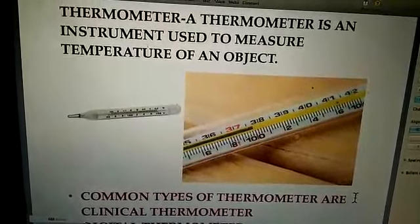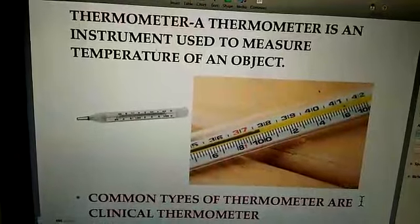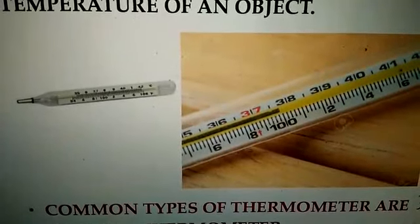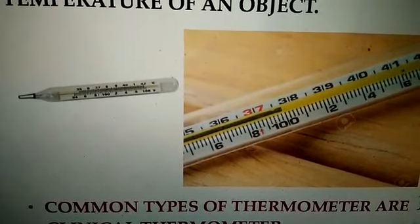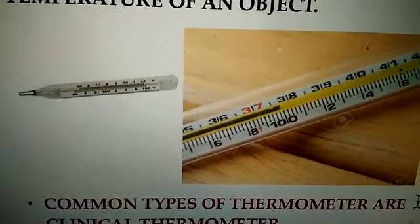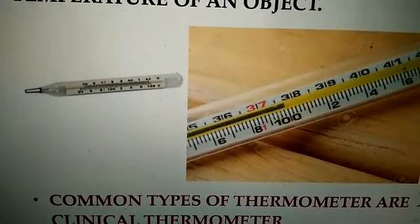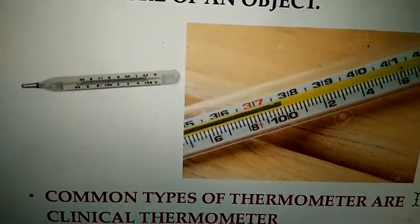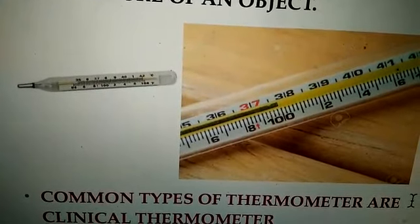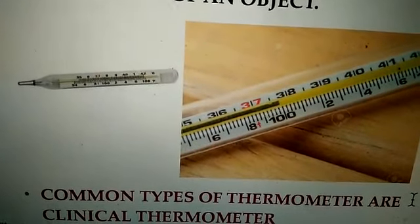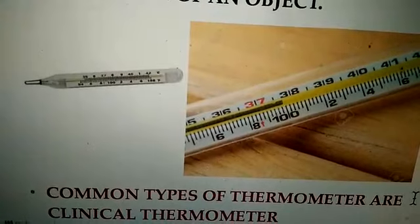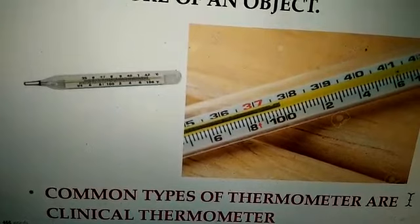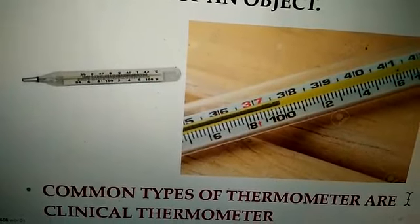In this picture given here, first of all, the clinical thermometer is shown. Now you can see on the left side, this is the diagram of the clinical thermometer. This thermometer is made up of a uniform glass tube. At one side, on the left side, is a small glass bulb which is filled with mercury, and on the right side, this glass tube is sealed.